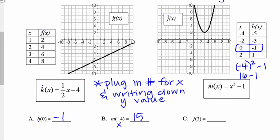Let's look at c: j of three. j of three means I'm going to plug in three for my x value. j is that quadratic graph up there. I find three along my x-axis, and the y value associated with that is two. The answer is two.